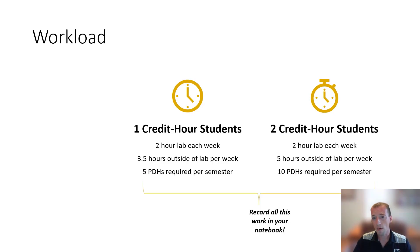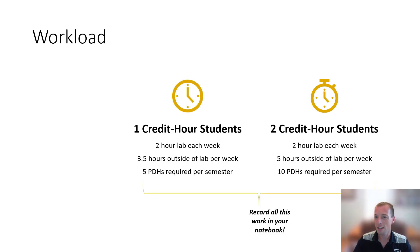For a two credit hour student you're going to have that same two-hour lab each week, but instead of three and a half you'll bump up to about five hours a week outside of lab working on your project. We really should see a tangible difference between a two credit and one credit student in terms of the work that you're getting done, either independently or in your small groups and project teams. And then instead of five you'll have 10 PDHs or professional development hours per semester.